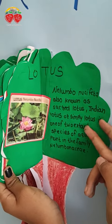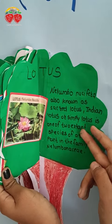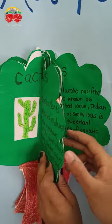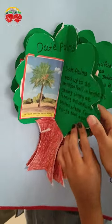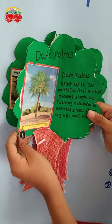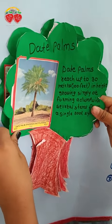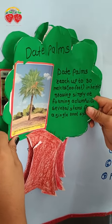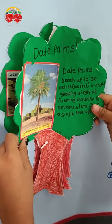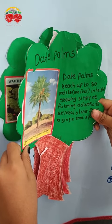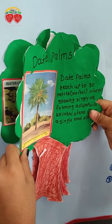This is an aquatic plant. This is a dead plant. Dead plants can reach up to 30 meters, which is 100 feet.